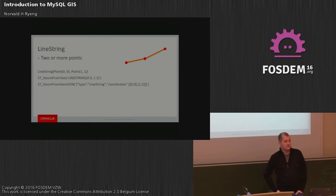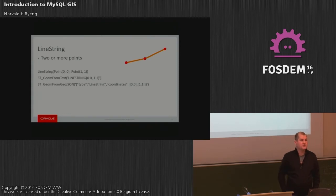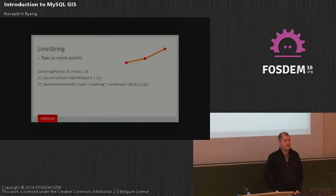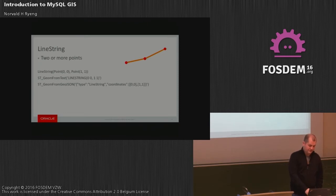Line strings are a connected set of line segments — you just specify the points and they're all connected. On a plane it's obvious: a shortest path. When you go on a globe, it's going to be a great circle, and with different coordinate systems this will change.